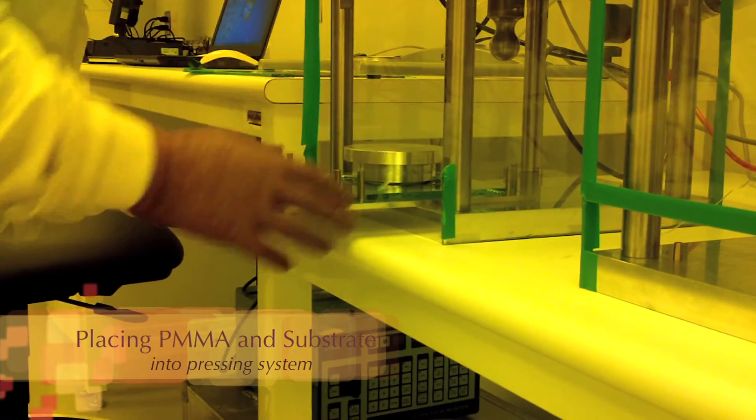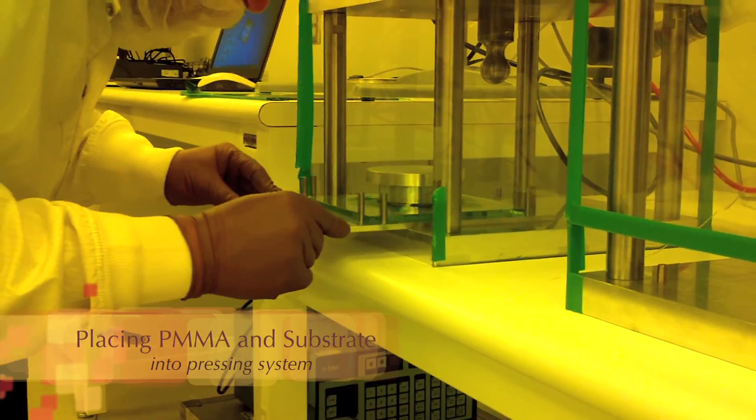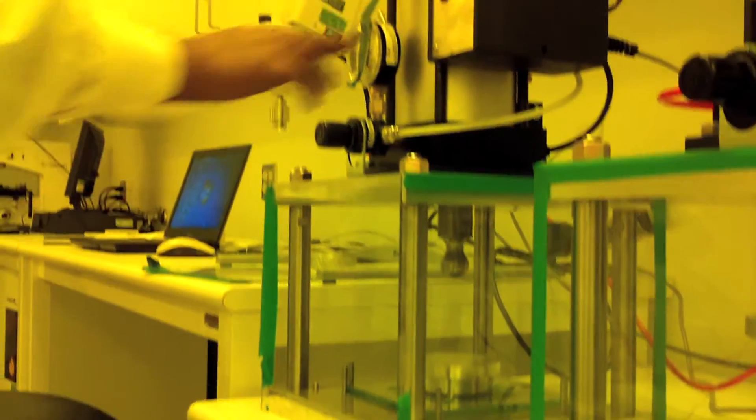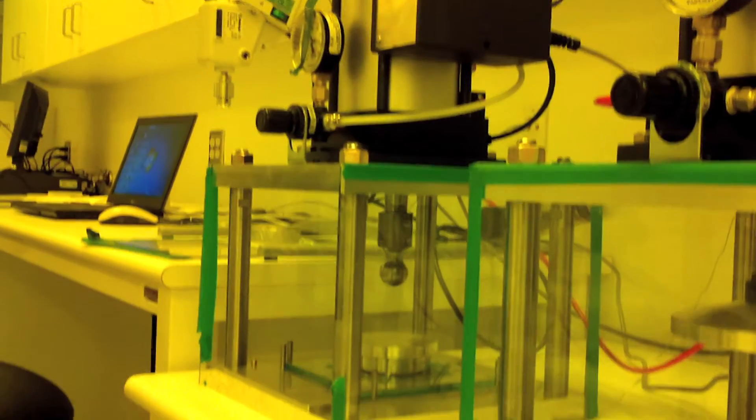The sample is left under the press overnight. Under pressure, the monomer glue polymerizes and forms a nice glue layer attaching the PMMA sheet to the substrate.